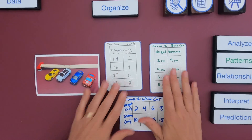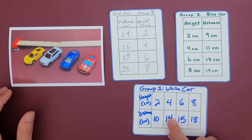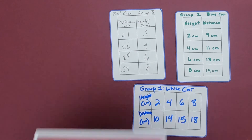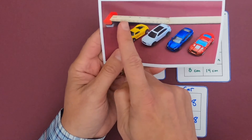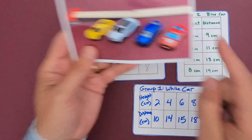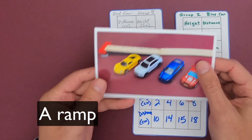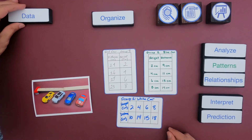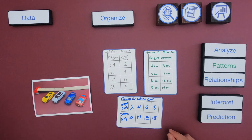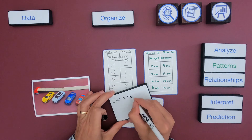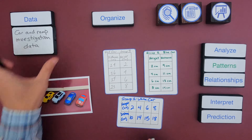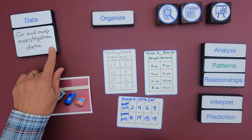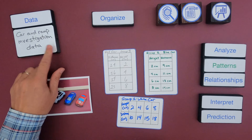I've got a bunch of data — think of these as data tables collected by different groups: groups one, two, and three. In this investigation, they were letting cars roll down a ramp from different heights and seeing how far the car would roll. The first thing I want to do is write down what data I'm actually analyzing — in this case, the results of a car and ramp investigation.